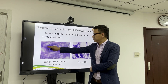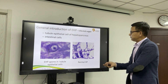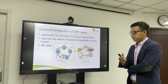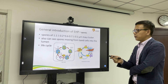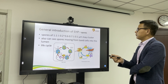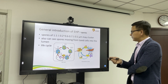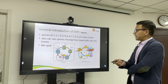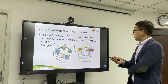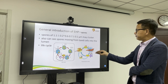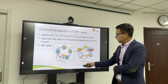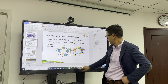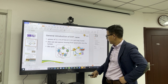Here we can see a lot of spots. EHP spores are very, very tiny — ranging from 1.1 ± 0.2 to 0.6–0.7 ± 0.1 micrometers. They always cluster together and can be seen moving from inside the cell into the lumen. The spores will infect the cell.